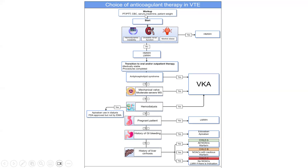The first factor is whether the patient is hemodynamically unstable. The second is whether the patient has unstable renal function. The third is whether the patient is morbidly obese. If any of these factors exist, we will start with unfractionated heparin. If none of these factors are present, we can start anticoagulation with either unfractionated heparin or low molecular weight heparin.